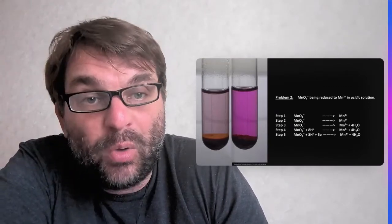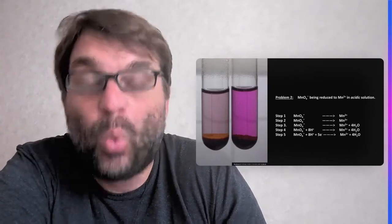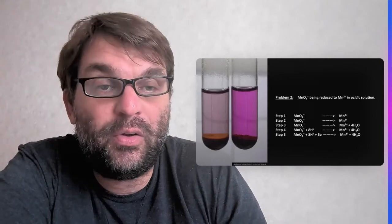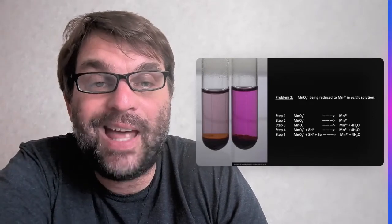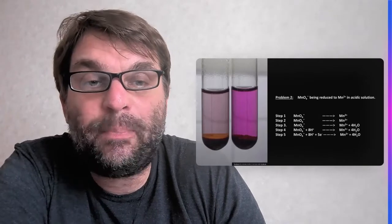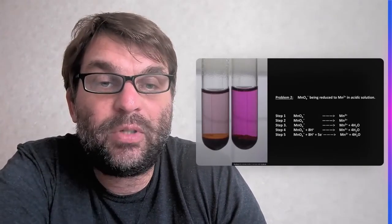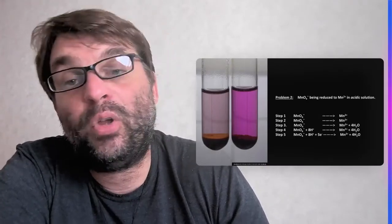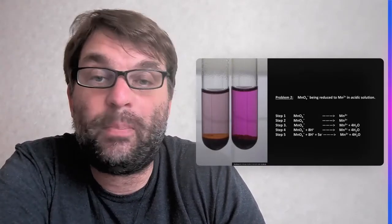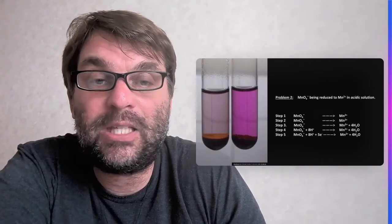Our problem now becomes, well, now we've got an unbalanced number of hydrogen atoms, because now by adding water you have eight hydrogens on the right-hand side and none on the left-hand side. So we do this balancing by adding eight protons to the left-hand side, so 8 H+. So now both oxygens and hydrogens are balanced on both sides, and now our charges are not going to be balanced. That's our last step.